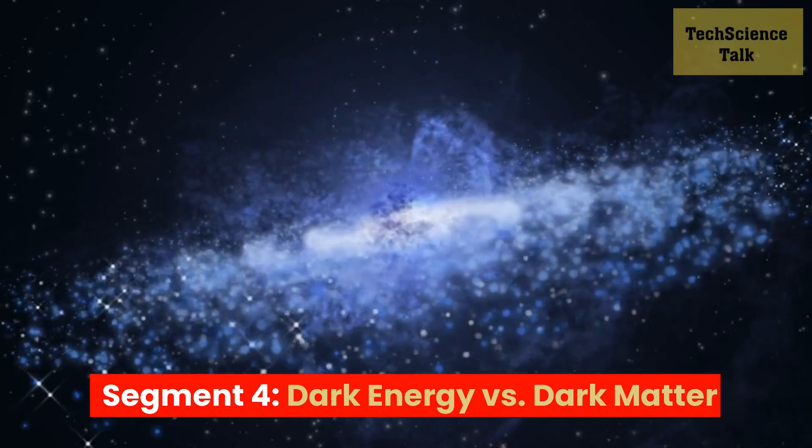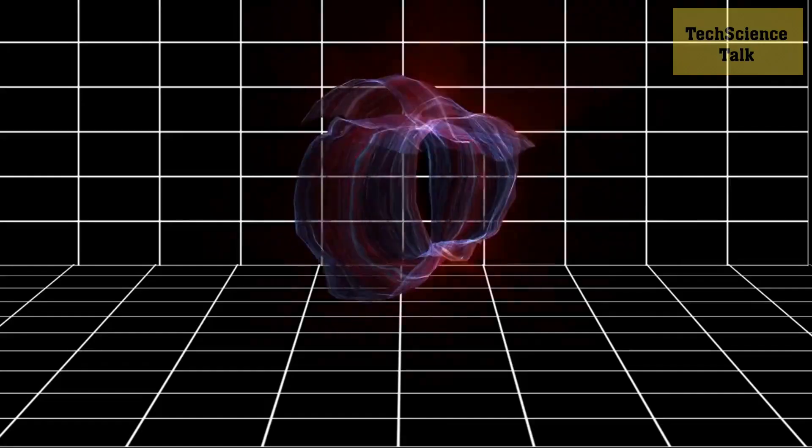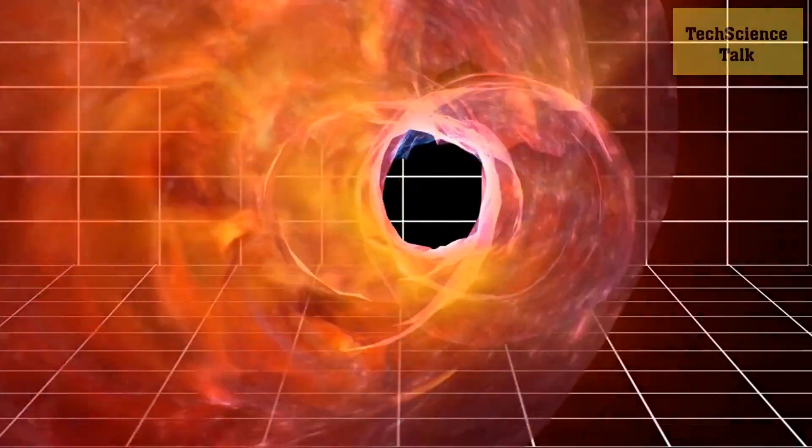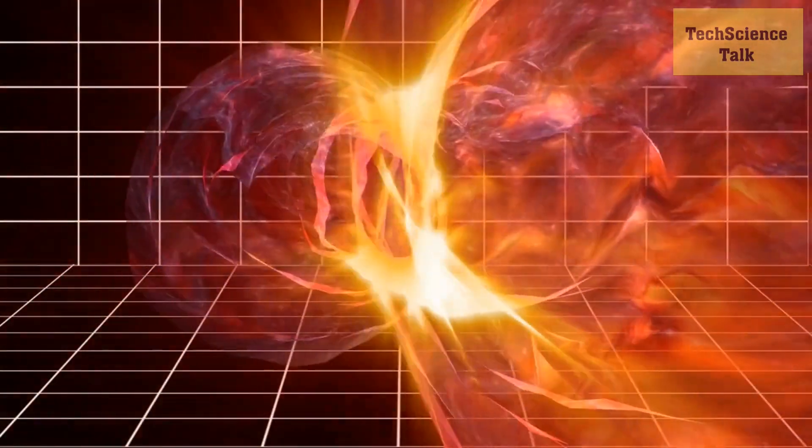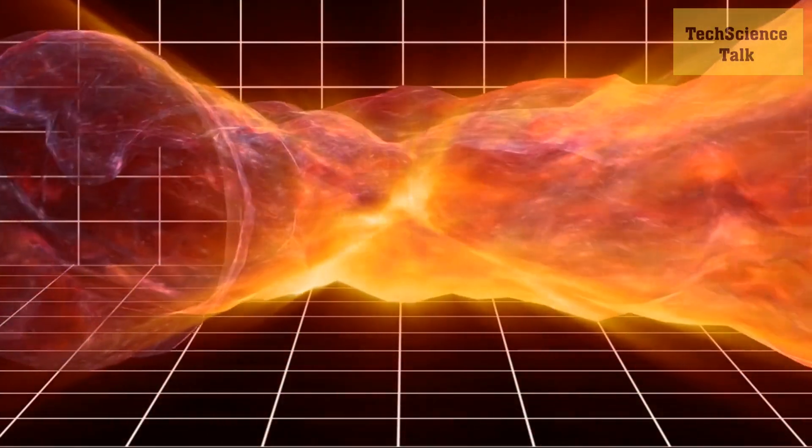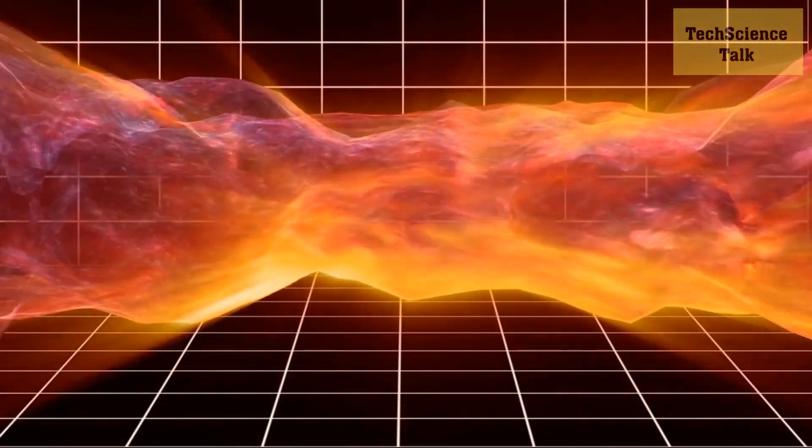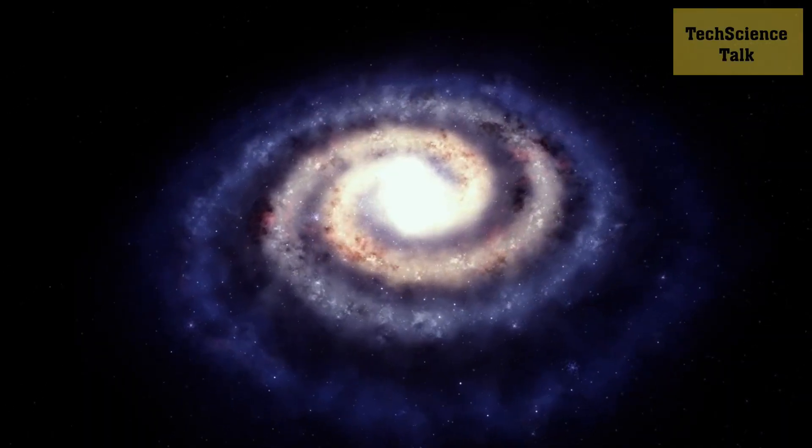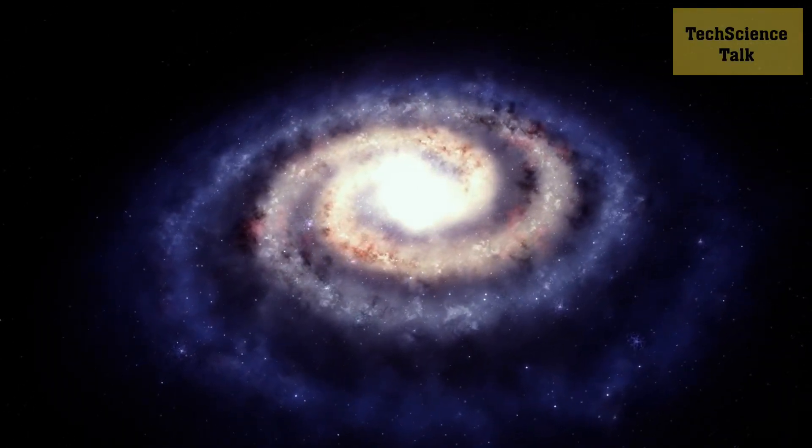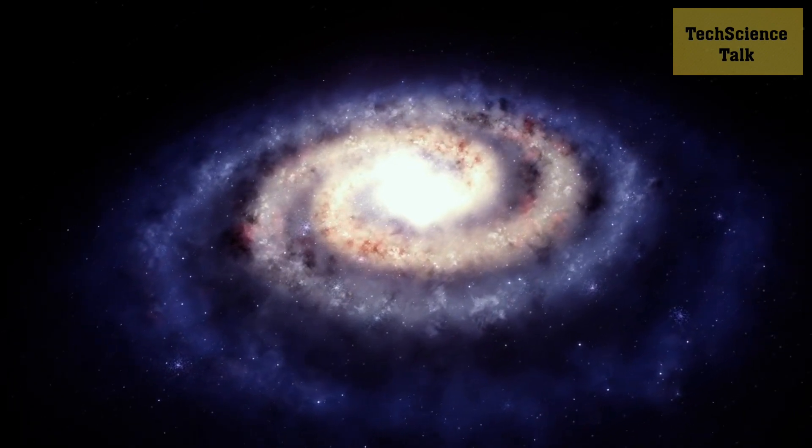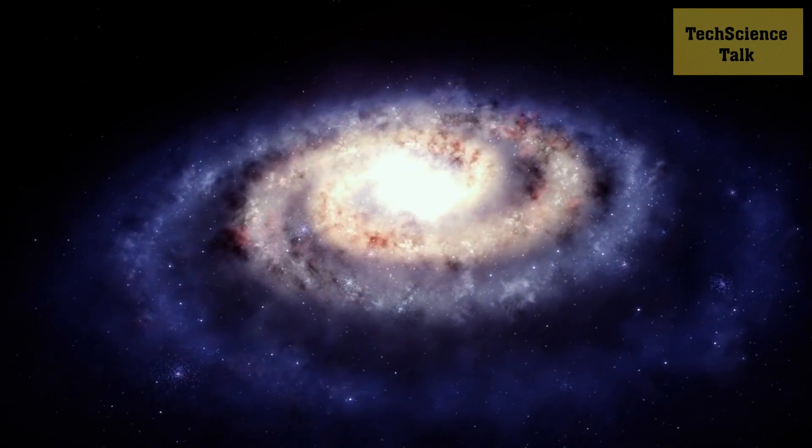Segment 4: Dark Energy vs. Dark Matter. Although dark energy and dark matter are both mysterious components of the universe, they are distinct entities with different roles in shaping cosmic evolution. While dark energy drives the accelerated expansion of the universe, dark matter, on the other hand, influences the formation and structure of galaxies. Dark matter is a form of matter that does not interact with light or other electromagnetic forces, making it invisible and detectable only through its gravitational effects.